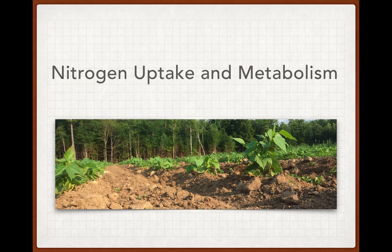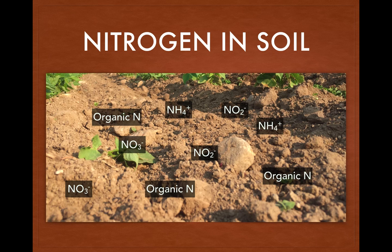I'd like to talk a little bit about the way in which plants uptake and use nitrogen, and that process starts in the soil, where nitrogen is found in a number of forms, including as organic nitrogen, which comes from living things, NH4+ ammonium, NO3- nitrate, and NO2- nitrite.